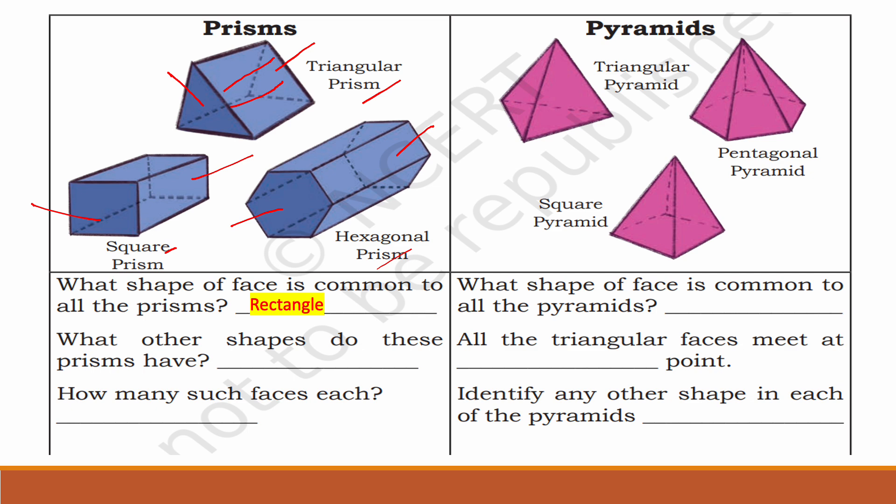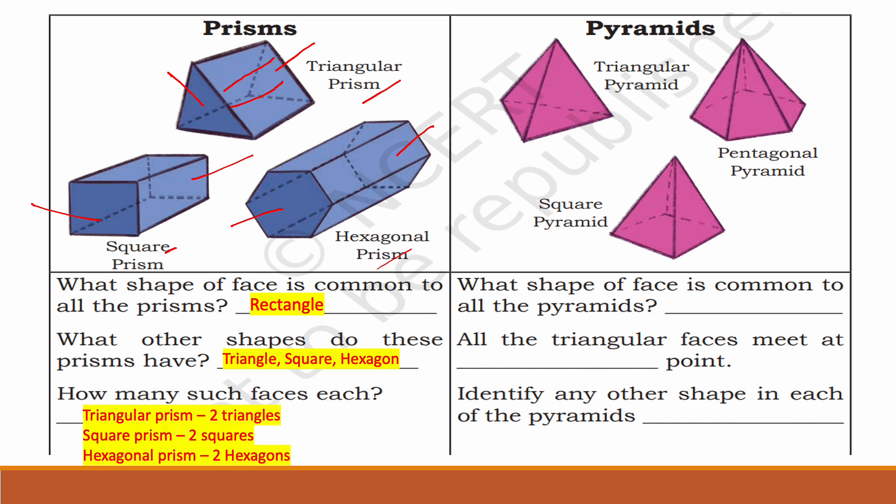What other shapes do these prisms have? Triangle, square, hexagon. In a hexagonal prism you can see hexagonal bases; in a triangular prism, triangular bases; in a square prism, square bases. How many such faces each? A triangular prism has two triangles, a square prism has two squares, and a hexagonal prism has two hexagons.